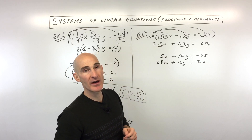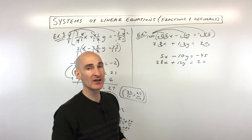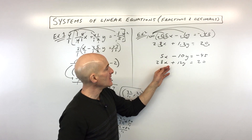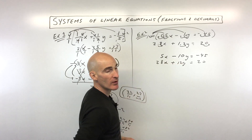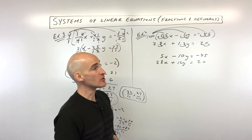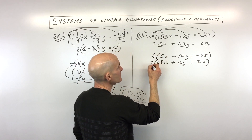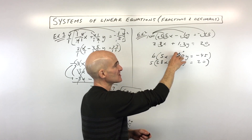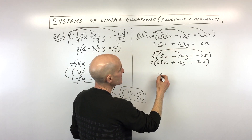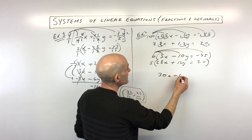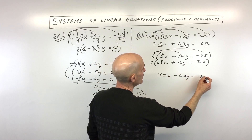So again, let's use the elimination method — we're going to try to eliminate either the x's or the y's so that when we add the two equations together, one variable cancels out. This one is a little more challenging. Looking at the y's: what's the smallest number that 10 goes into and 12 goes into? That's 60. So I'm going to multiply the top equation by 6 to make this negative 60y, and the bottom equation by 5 to make this positive 60y. Distributing the 6: that gives us 30x minus 60y equals negative 270.